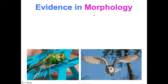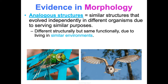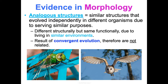The last type of structure in morphology are analogous structures. These are structures that look similar but evolved independently in different organisms because they serve similar purposes. They're different structurally but function similarly due to living in similar environments. They are evidence of convergent evolution — organisms that are unrelated but look similar because they're in the same environment. Knowing they are not related is still helpful information.